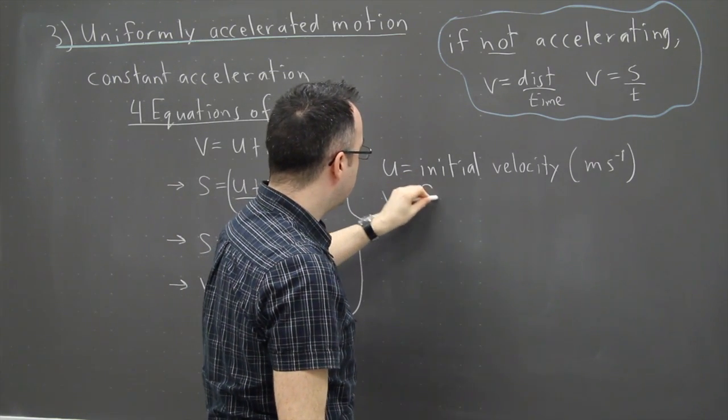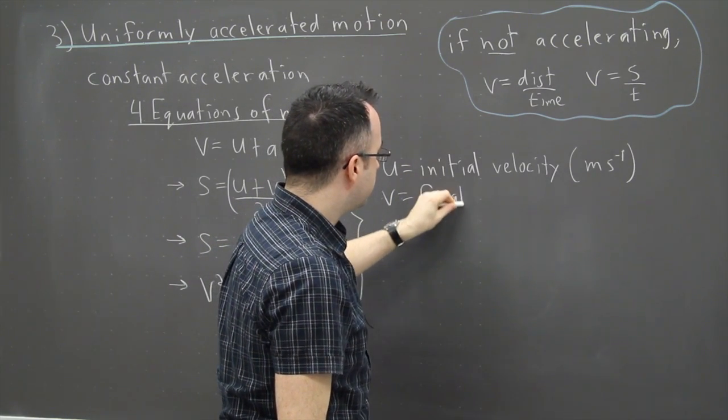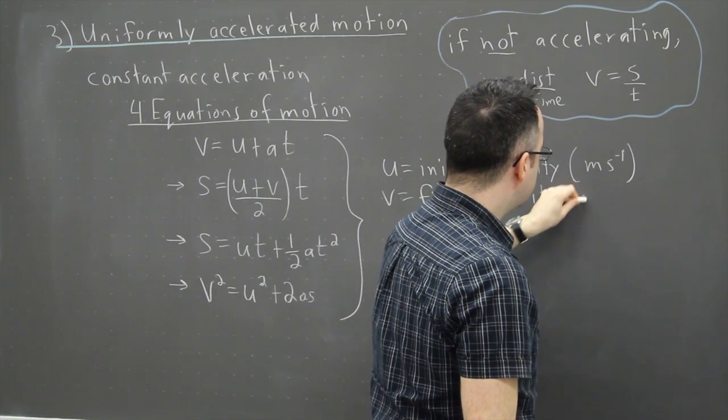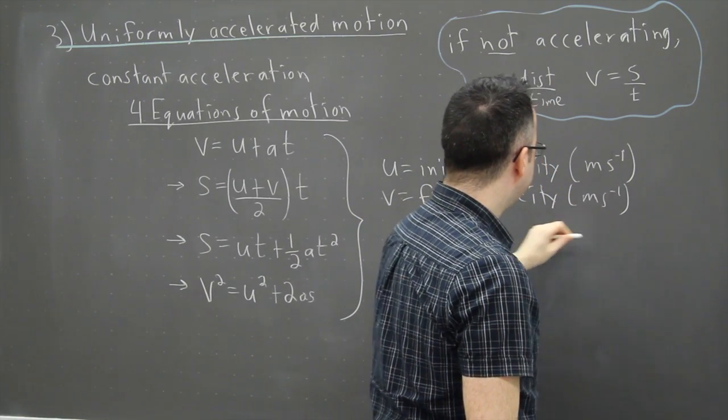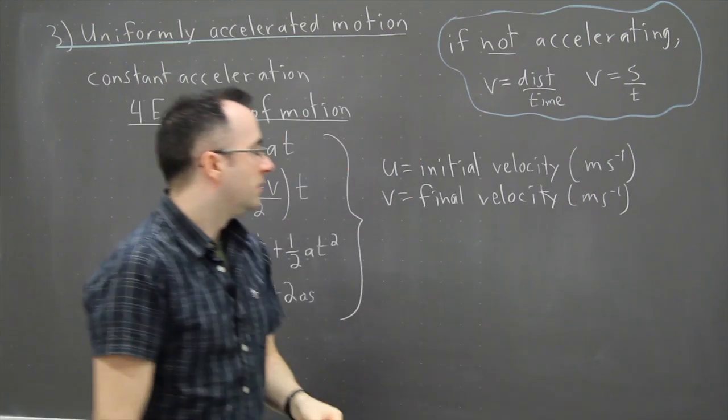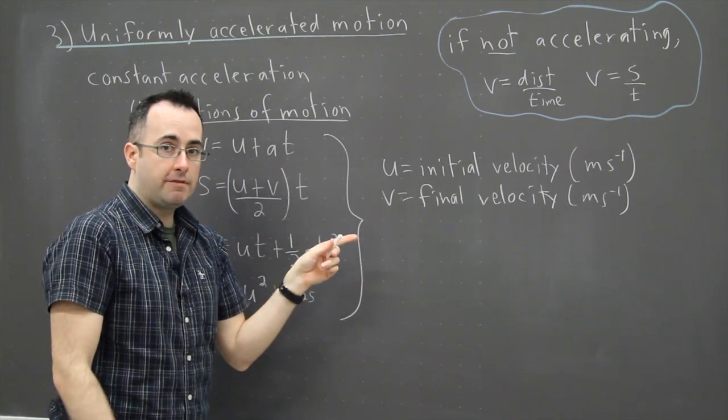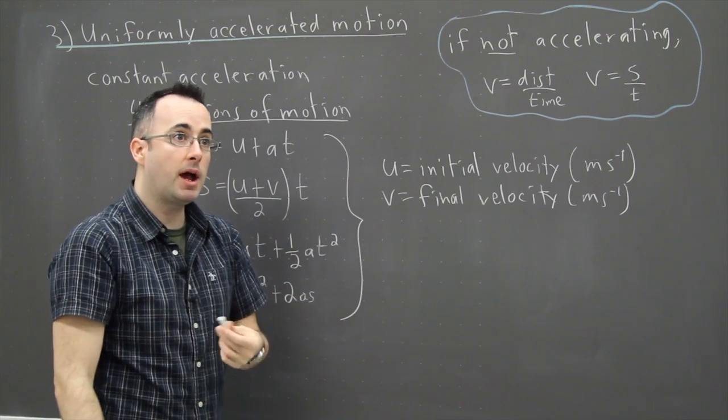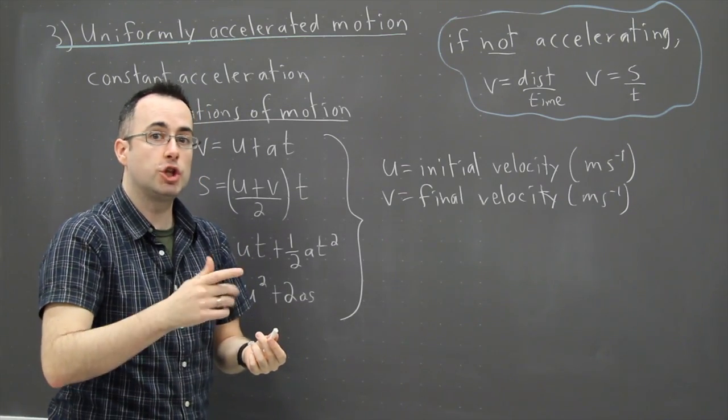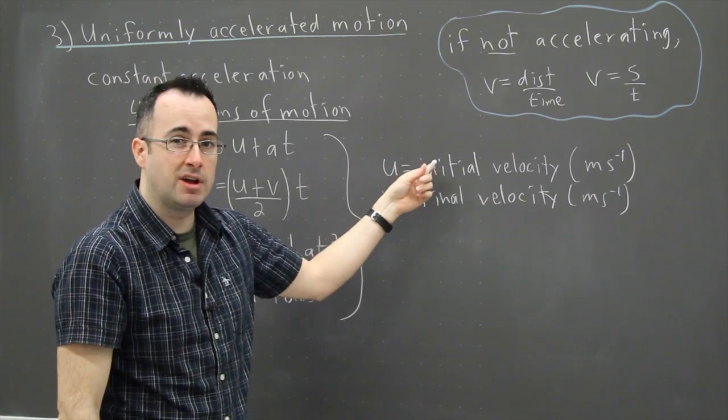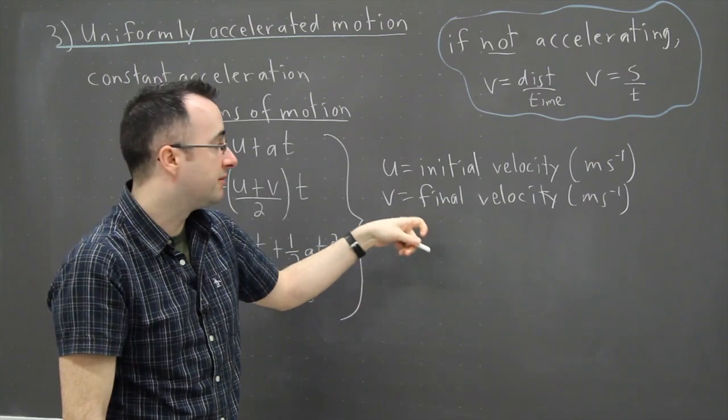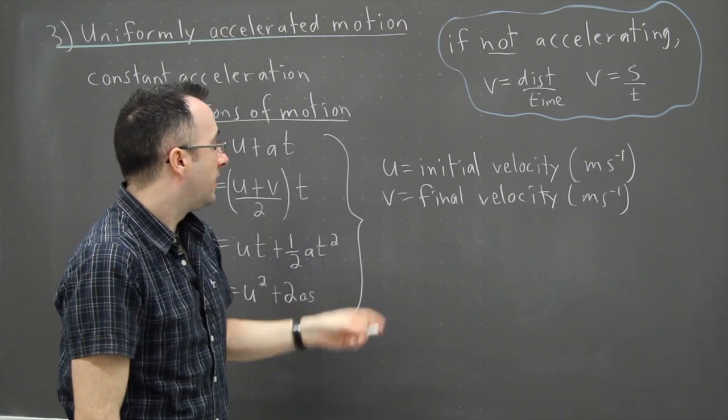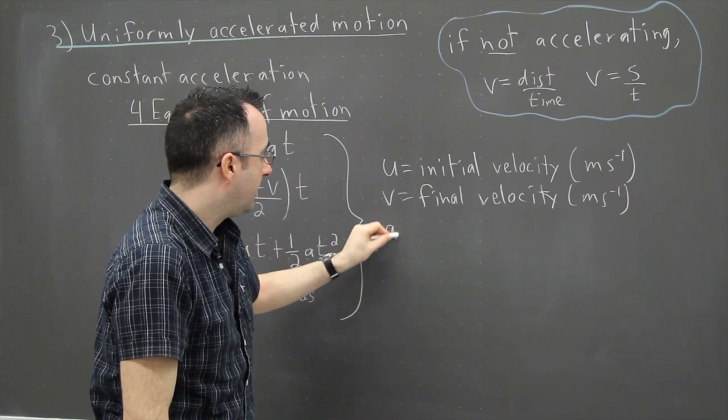So U is initial velocity or initial speed, which is in meters per second. V then is the final velocity. And that's also in meters per second. So here we're starting off initially with some sort of speed and then we speed up or perhaps we slow down. So then maybe your initial velocity is larger than your final velocity. It doesn't matter. There's no problem there.